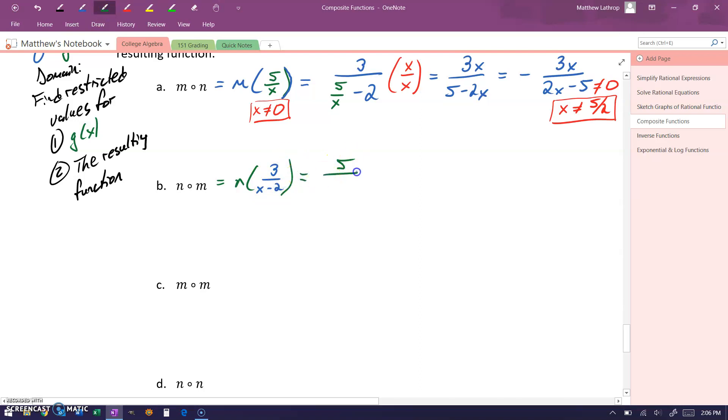Which is going to give us 5 over 3 over x minus 2. We can multiply by the reciprocal of that expression in the denominator to rewrite this as 5 times x minus 2 over 3, or 5x minus 10 over 3.